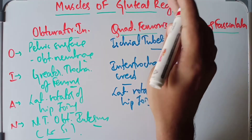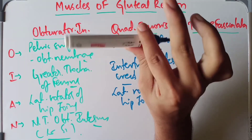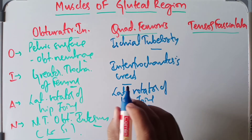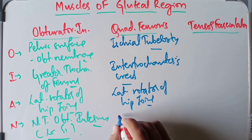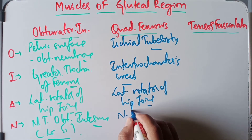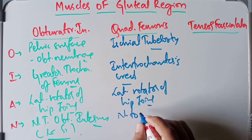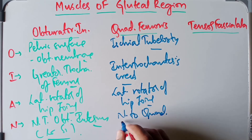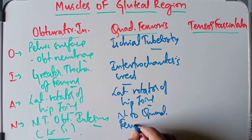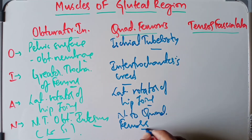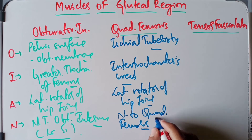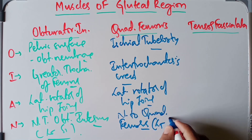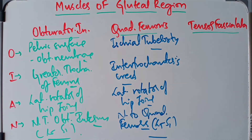The nerve supply of the quadratus femoris is by the nerve to quadratus femoris, which arises from the L4 and S1 spinal segments of the sacral plexus.